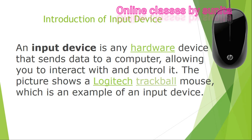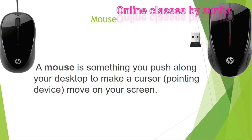The first input device is the mouse. A mouse is something you push along your desktop to move a cursor — a pointing device — on your screen. You can see my cursor on the screen. There are two types of mouse available in the market: a wireless mouse and a wired mouse that you attach to your computer or laptop.